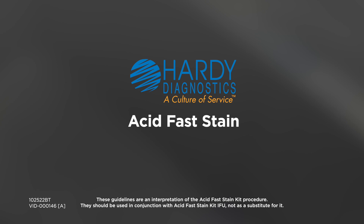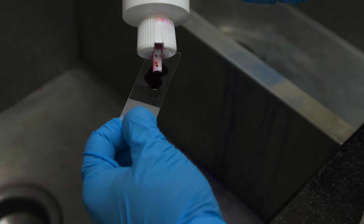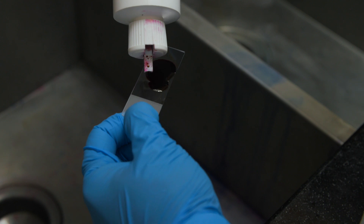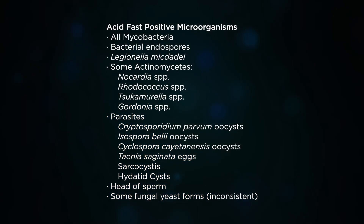The acid-fast stain is useful in detecting tuberculosis and other acid-fast microorganisms from clinical specimens. Here is a list of positive acid-fast microorganisms that may be encountered from various patient specimens.